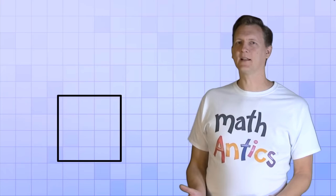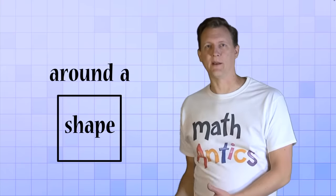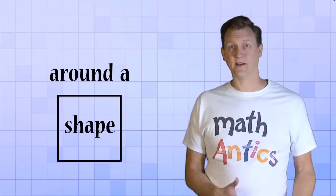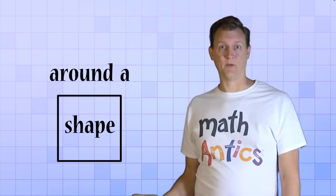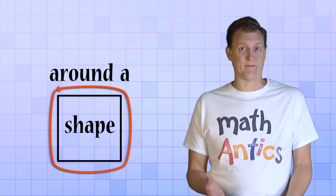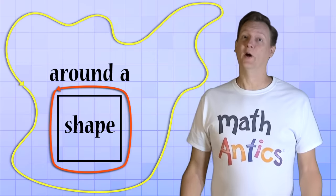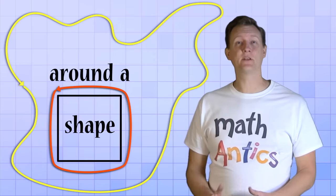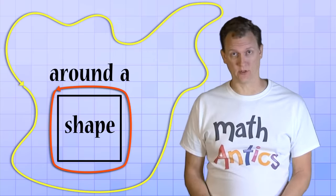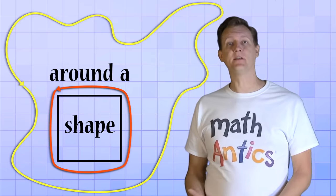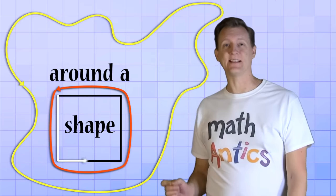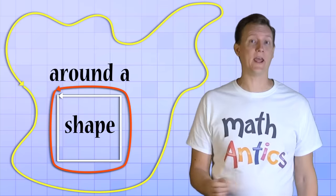But what exactly do we mean by around a shape? It seems like there would be a lot of different ways to go around a shape. Some of them would be short and some of them would be very long. Well, perimeter means the absolute shortest distance possible around a shape. That would be the distance you'd get if you traced the path exactly around the border or edge of a shape.